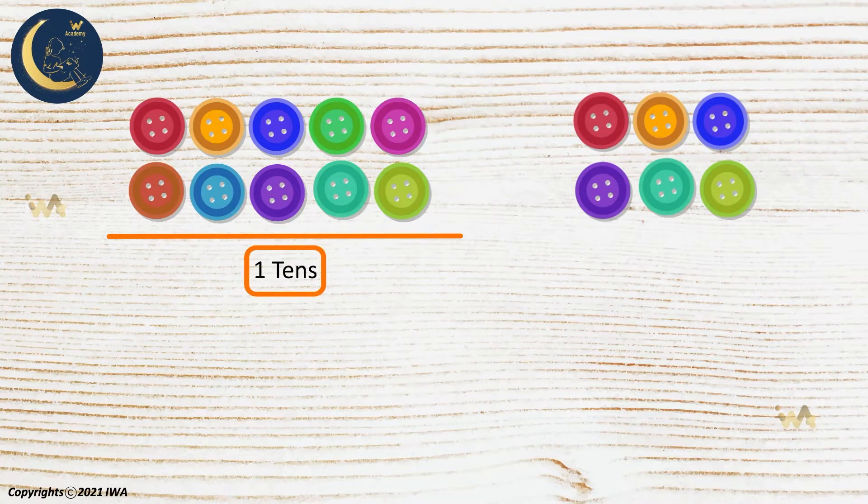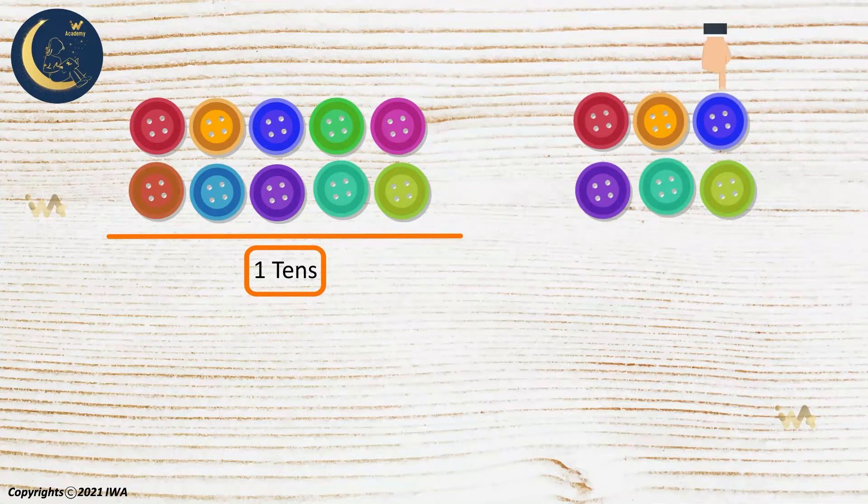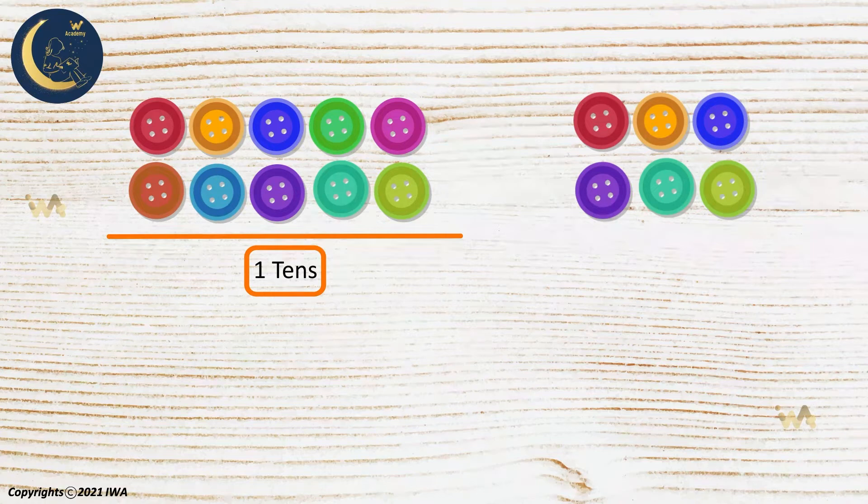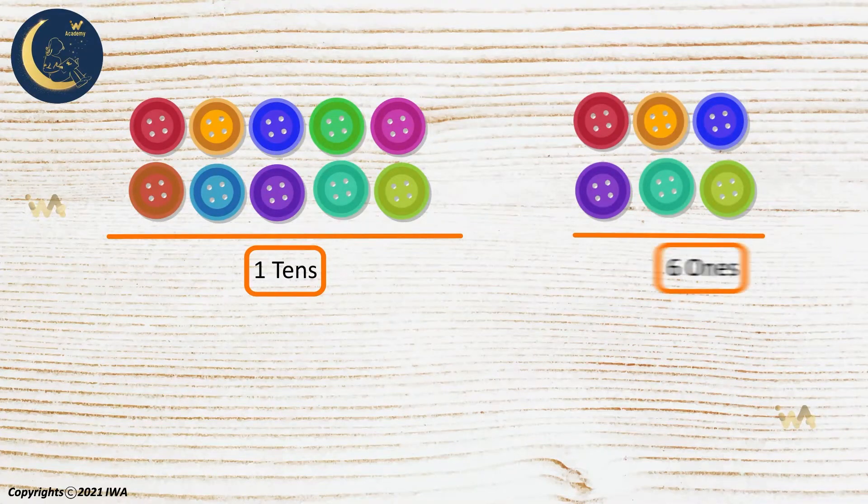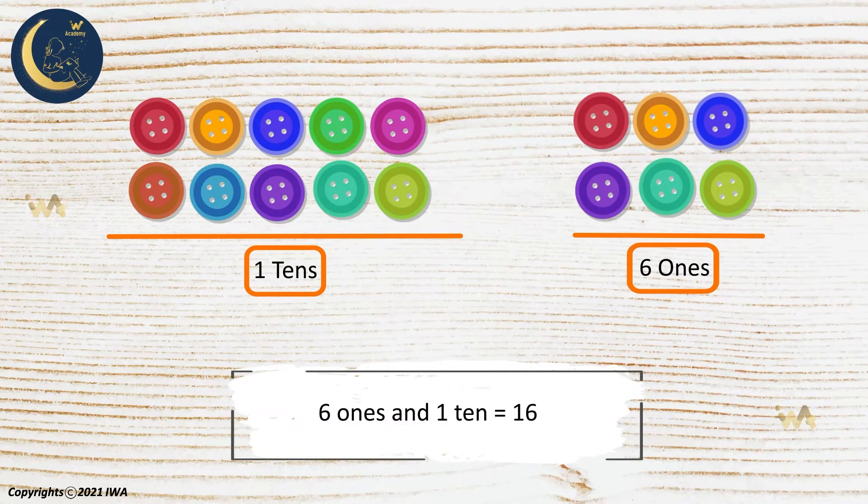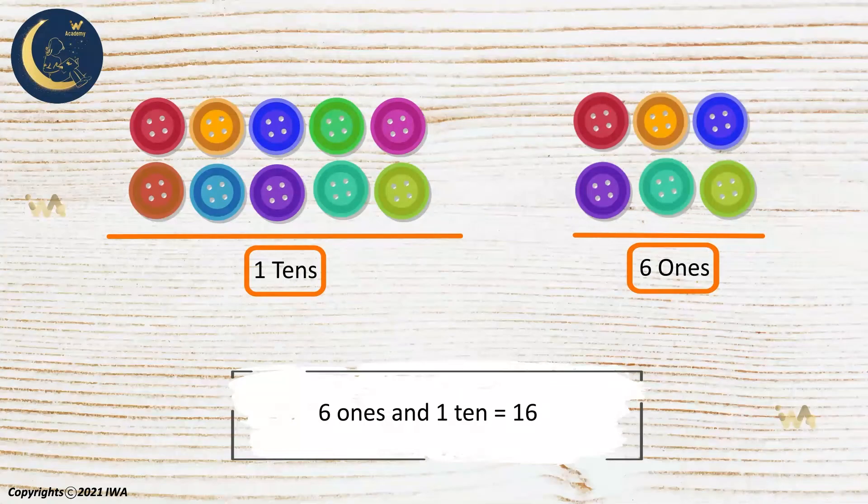Now we are left with these buttons. Let's count them. 1, 2, 3, 4, 5, 6. We have the tens equal to 1 ten, and the ones equal to 6.